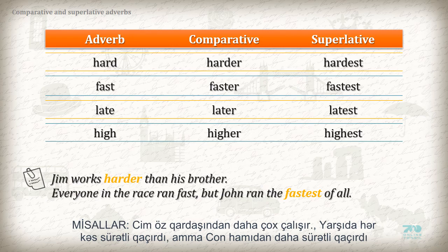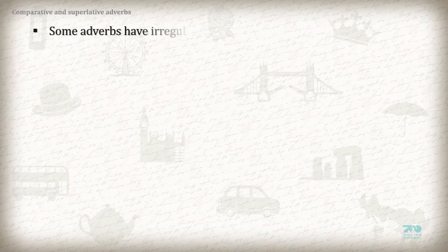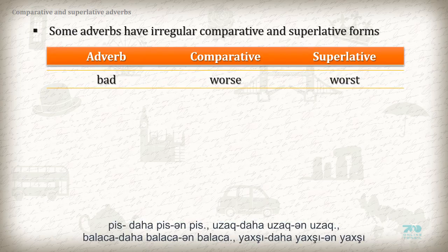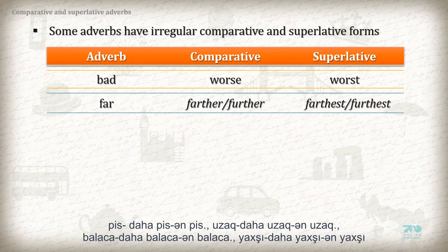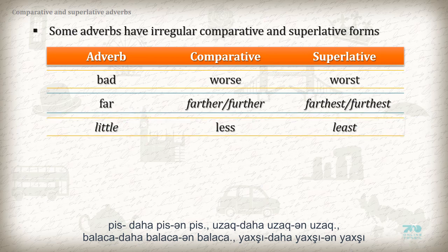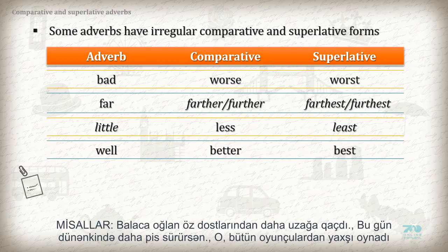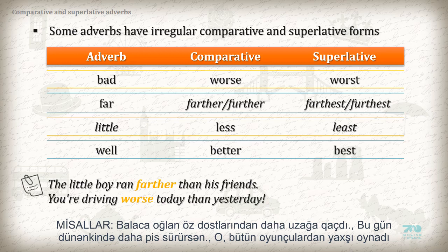Some adverbs have irregular comparative and superlative forms. For example: badly → worse → worst; far → farther / further → farthest / furthest; little → less → least; well → better → best. Examples: 'The little boy ran farther than his friends.' 'You are driving worse today than yesterday.' 'He played the best of any player.'